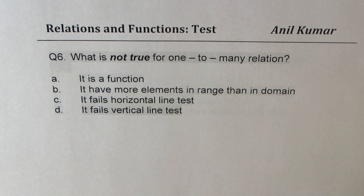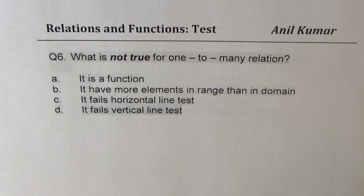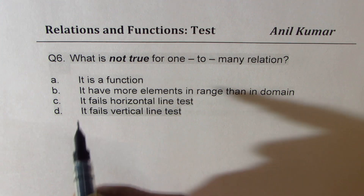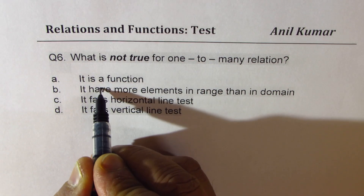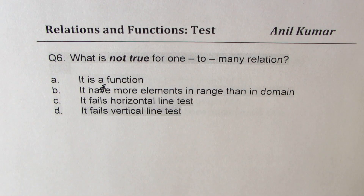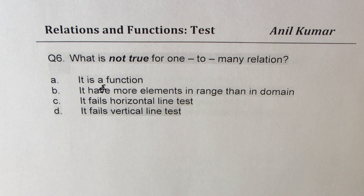Question number six: what is not true for a one-to-many relation? Options: it is a function; it has more elements in range than in domain; it fails the horizontal line test; it fails the vertical line test.